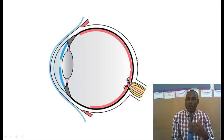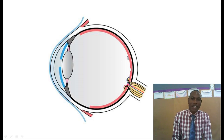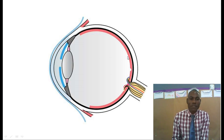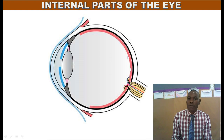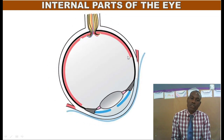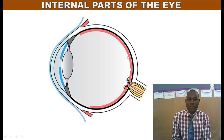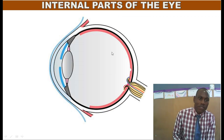We want to look once more at the parts of the eye, just briefly. And yes, we have there our diagram of the eye, and we'd like to name the parts of that eye very fast before we move on.